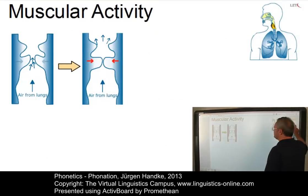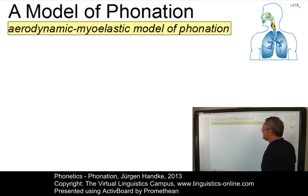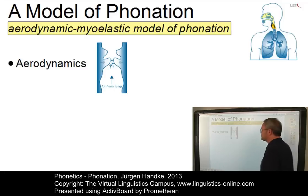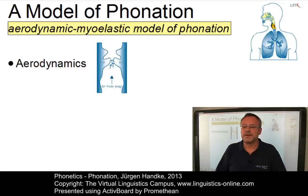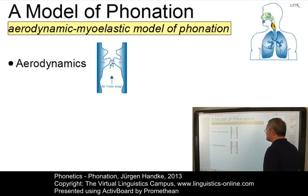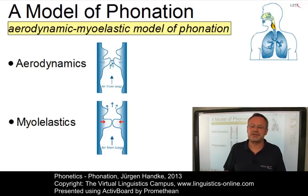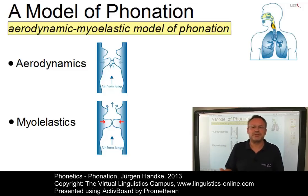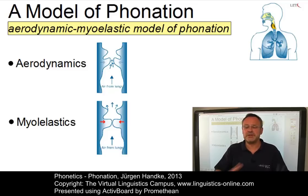In summary, two factors control glottal opening and closure: the aerodynamics of the airflow, opening the glottis via an airstream, and the elastic tension in the laryngeal muscles that work to close the glottis. Each cycle produces a single puff of air. The sound of the human voice is thus nothing more than tens or hundreds of these small puffs of air being released every second and filtered by the vocal tract.